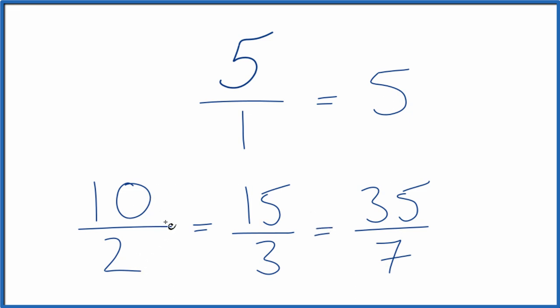If you divide 10 by 2, 15 by 3, 35 by 7, or 5 by 1, you get the whole number 5. That's because they're equivalent fractions for 5.